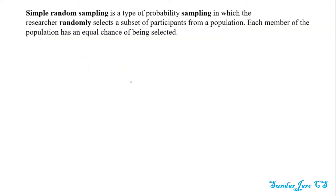Simple random sampling is a type of probability sampling in which the researchers randomly select a subset of participants from the population.